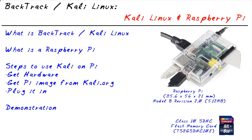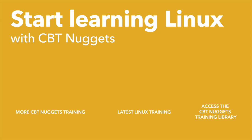In this micronugget, we've learned that Backtrack and Kali Linux are Linux distributions containing hundreds of penetration testing and hacking tools. We learned that a Raspberry Pi is a very small, affordable computer, and that we can run Kali Linux on it. We also took a peek at running an application like Wireshark on Kali Linux running on a Raspberry Pi. I hope this has been informative for you, and I'd like to thank you for viewing.